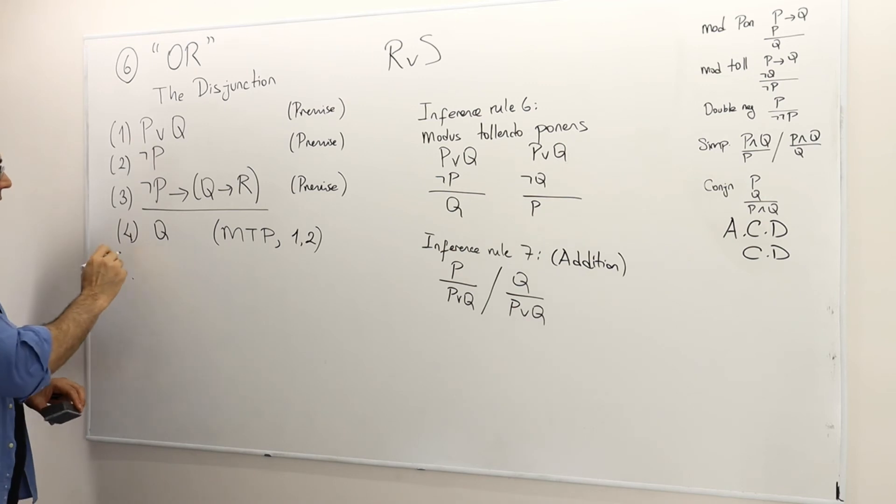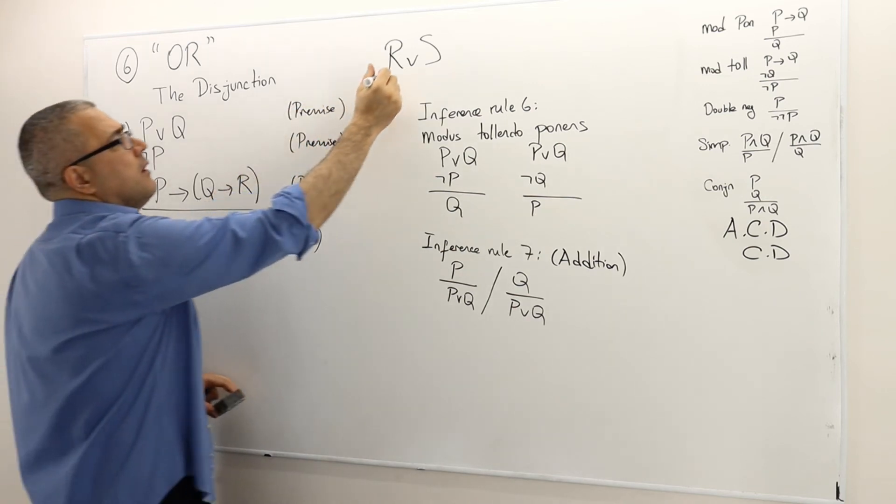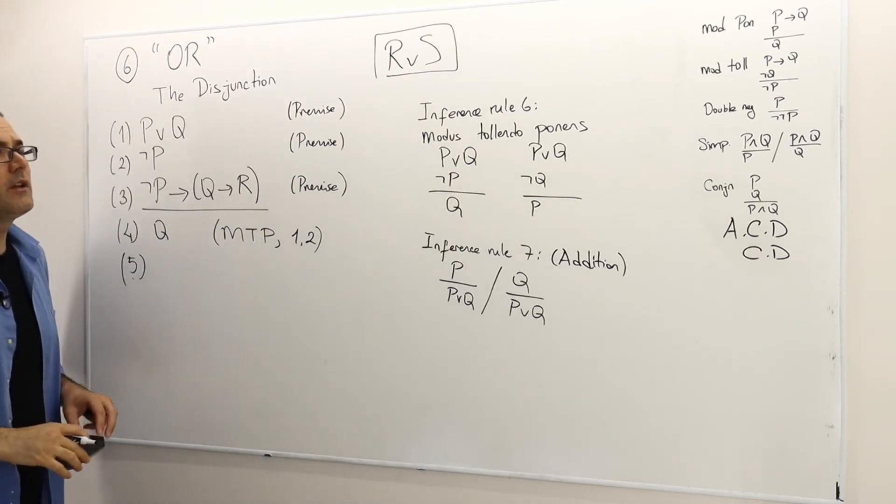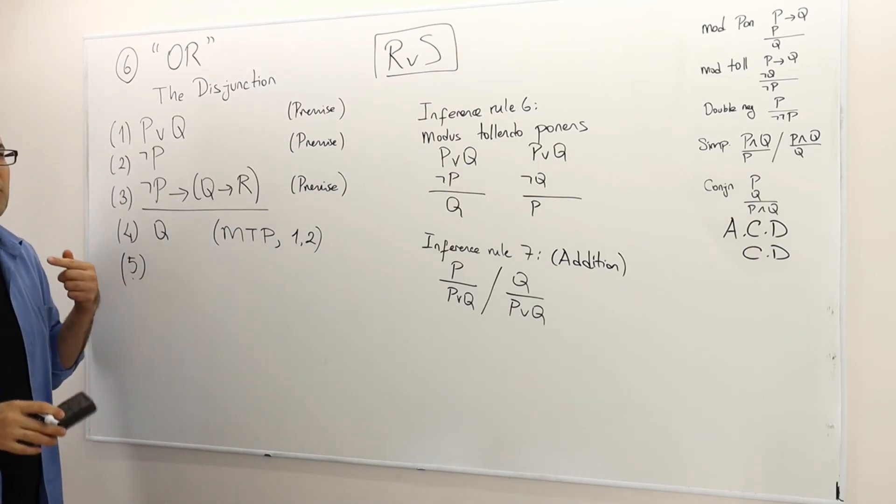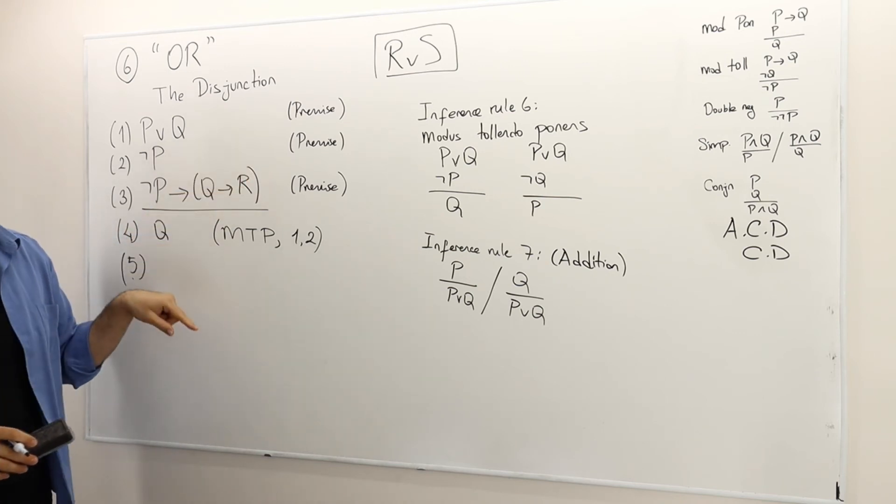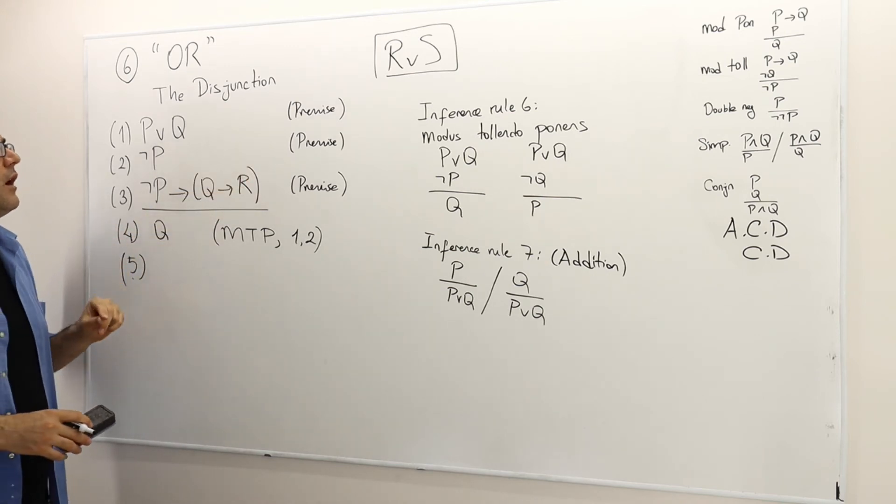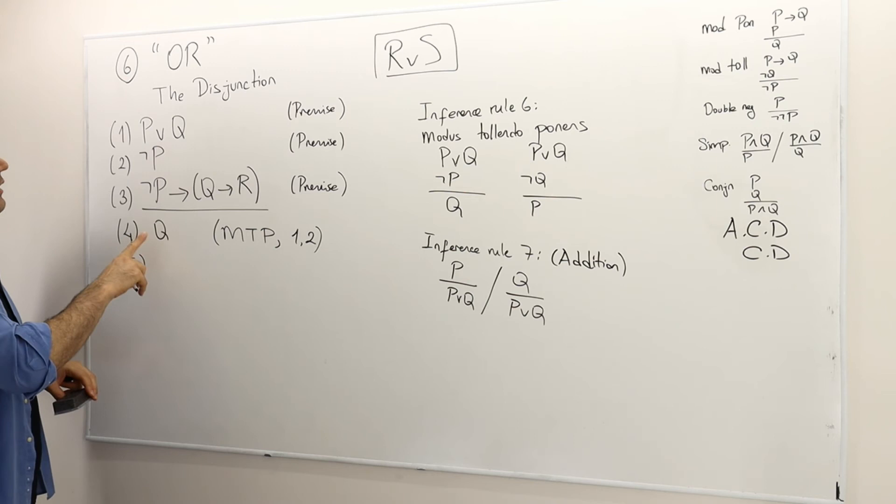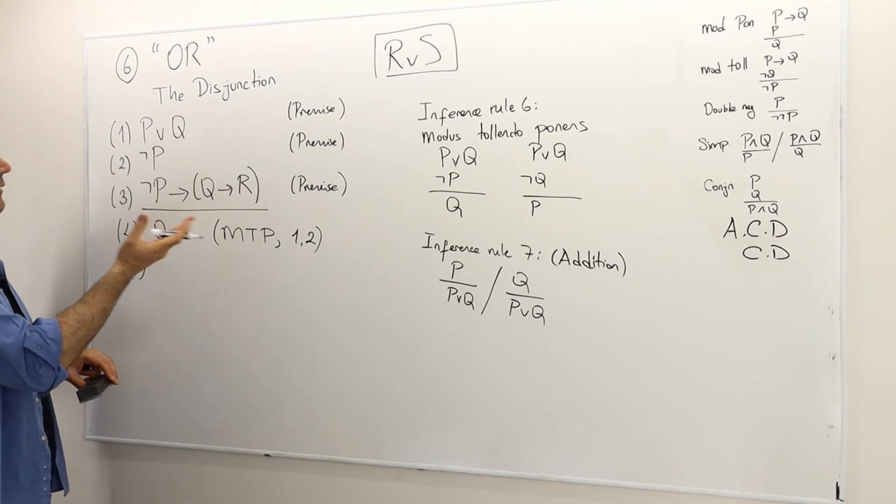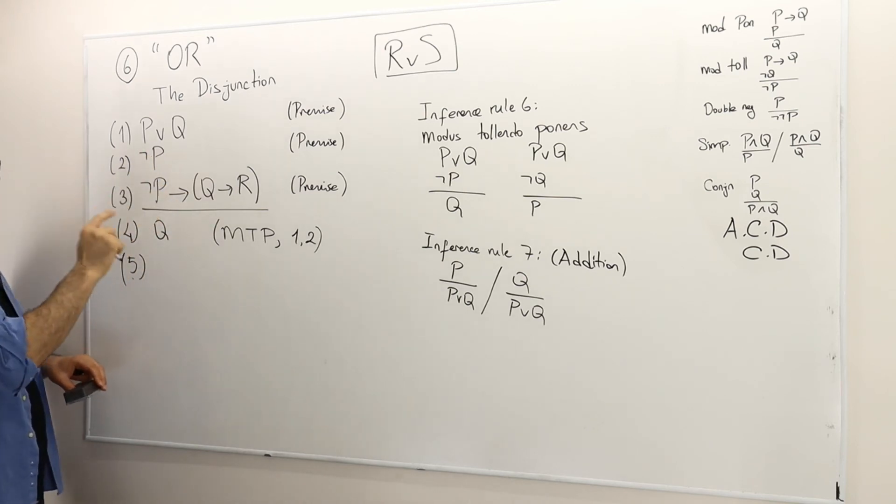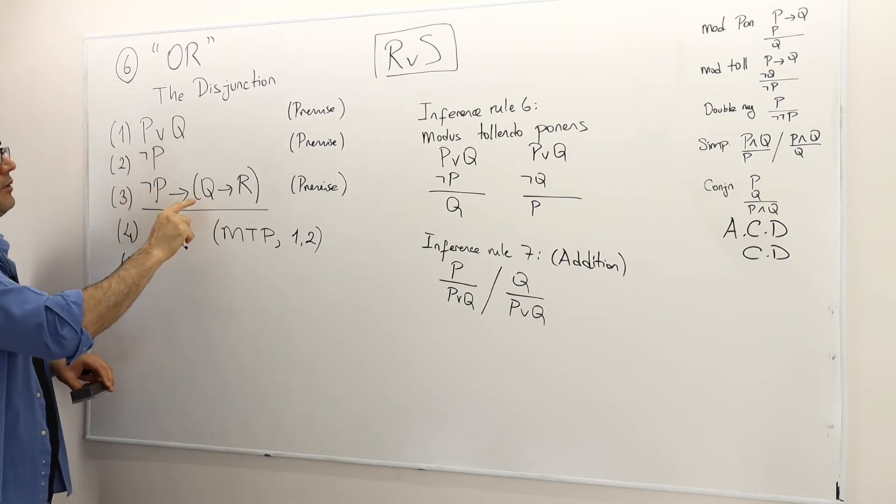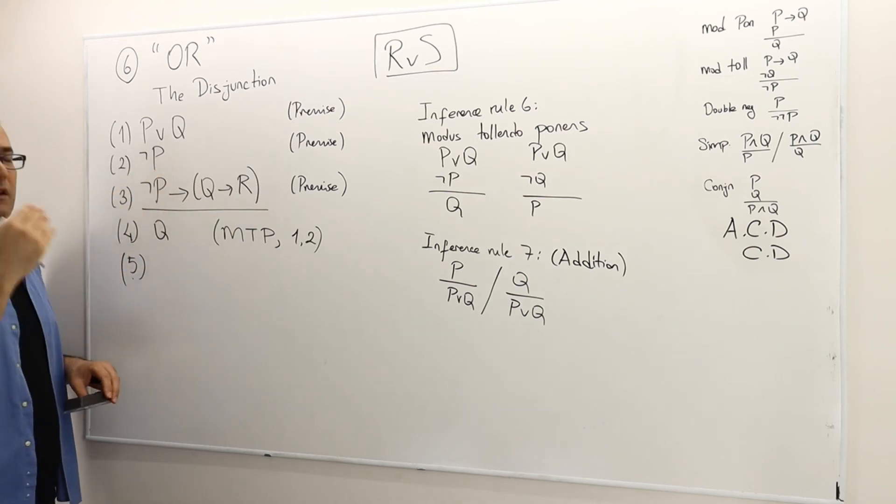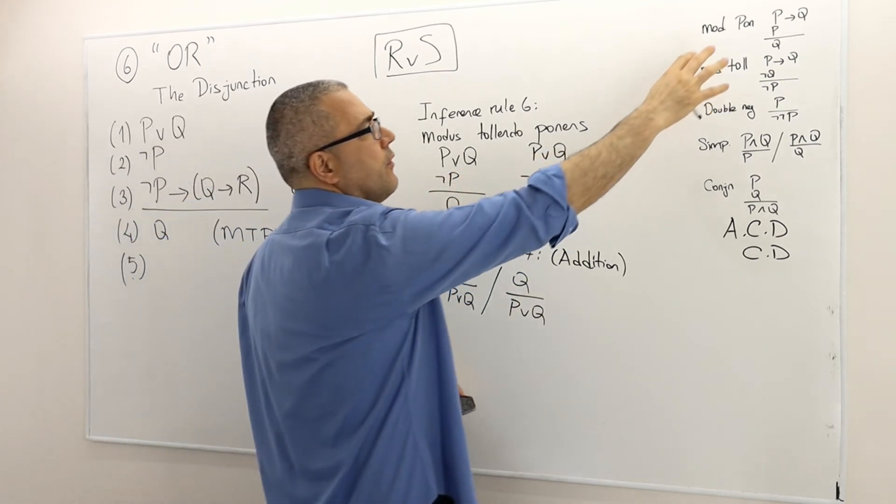And then what else? I remember in the conclusion we would like to show that R or S is true, so I need to get either R or S. I don't need to get both. Either R or S, then the proof will be done. But I just got Q only here. But once I have Q, what else do I know? I can still use again sentence two and three, because not P implies Q implies R, and not P—if you remember, this is a standard structure for modus ponens. So I'm going to get that Q implies R. So this is modus ponens between the arguments two and three.